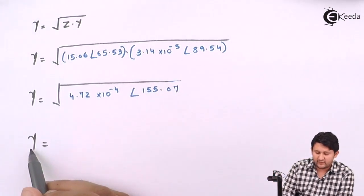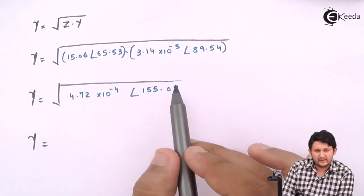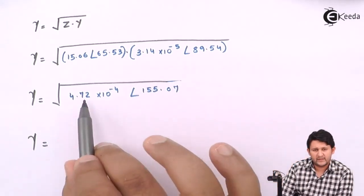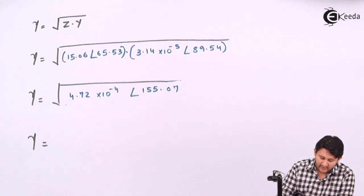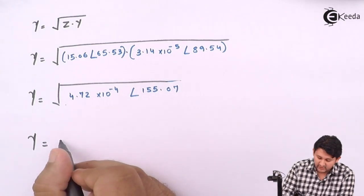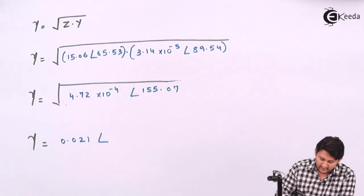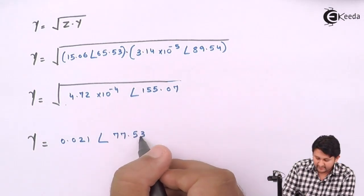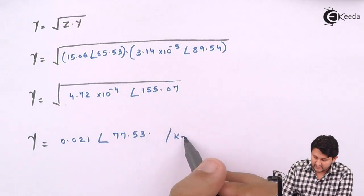Now take the square root of 4.72×10⁻⁴∠155.07°. Take the root of the real part: √(4.72×10⁻⁴) = 0.021, and divide the angle by 2: 155.07° ÷ 2 = 77.53°. So γ = 0.021∠77.53° per kilometer.